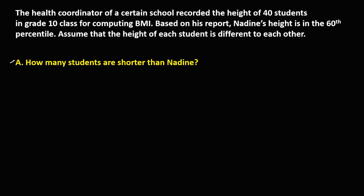So, how many students are shorter than Nadine? First, we need to compute the position of Nadine. Since Nadine's height is in the 68th percentile, we use the percentile formula: P sub K is equal to K over 100 times N plus 1.